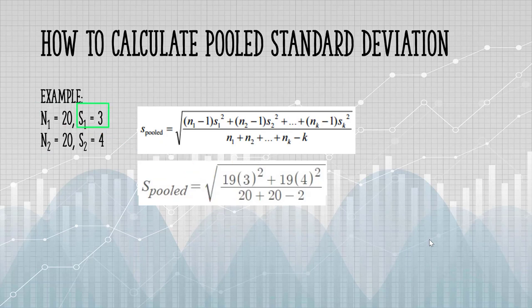Then we add sample 2 with 20 items, minus 1, that's 19, and we multiply that by the sample standard deviation of 4.